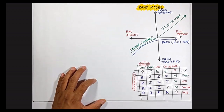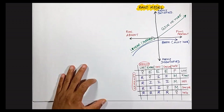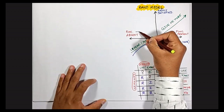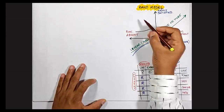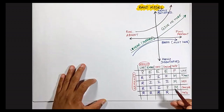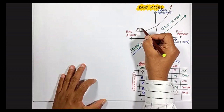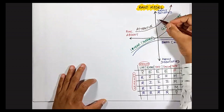The next category: if the functionality is absent, customers are neutral, but if it is present, they are extremely satisfied and extremely happy. If it is absent they are neutral; if it is present, they go way up — they are excited. This is called the attractive or exciter category, and it excites people.